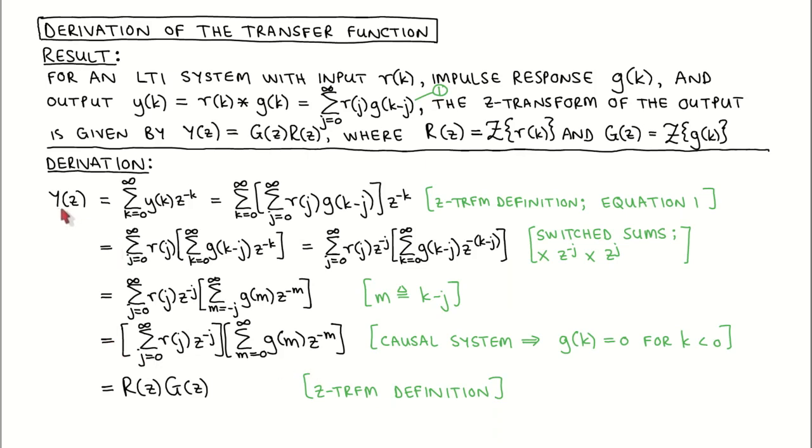We start by writing Y of Z using the Z-transform definition and then substituting the convolution sum for the output signal. We now switch the sums around and take R of J out of the inner sum, since it is independent of K.